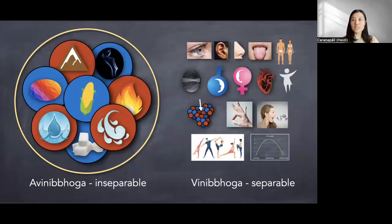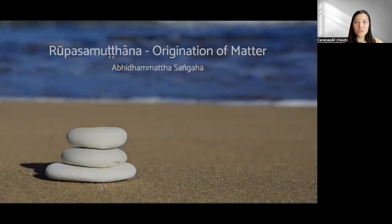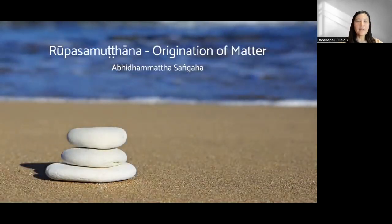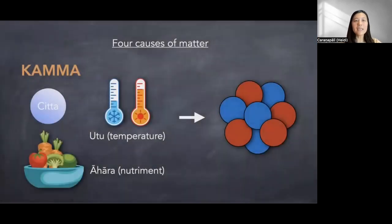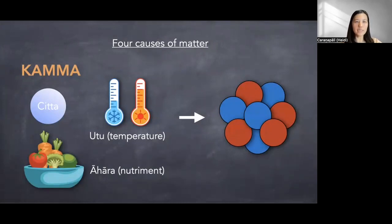Let's go to the origination of matter. The Buddha explained that there are 18 types of material property called the concretely produced matter. The concretely produced matter can be produced by four kinds of causes: karma, citta (which is consciousness or mind), udu (temperature), and ahara (nutriment). So it can be produced by these four things.